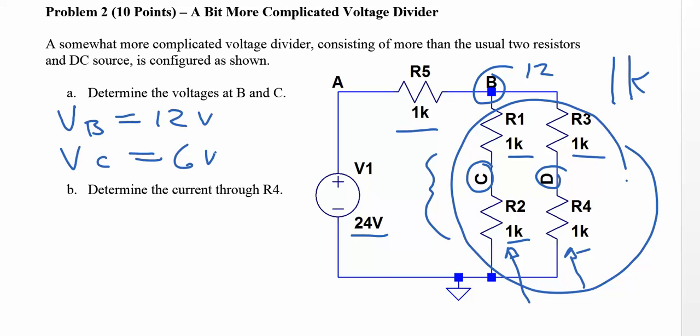Now the question is, what's the current through this resistor right here? Well, the voltage at D must be the same as at C, which is 6 volts.